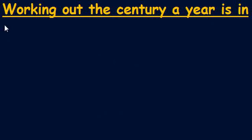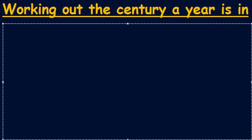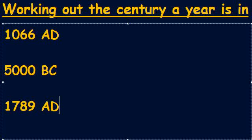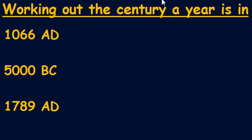I'm going to give you three different years to work out: 1066 AD, 5000 BC, and 1789 AD. Please pause the video and see if you can work out what century each of those years is in. Then I'll put the answers on the screen.